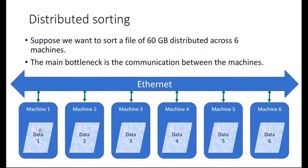The largest element of machine 1 should be smaller than the smallest element of machine 2, and similarly the largest element of machine 2 must be smaller than the smallest element of machine 3, and similarly for all of the rest machines.